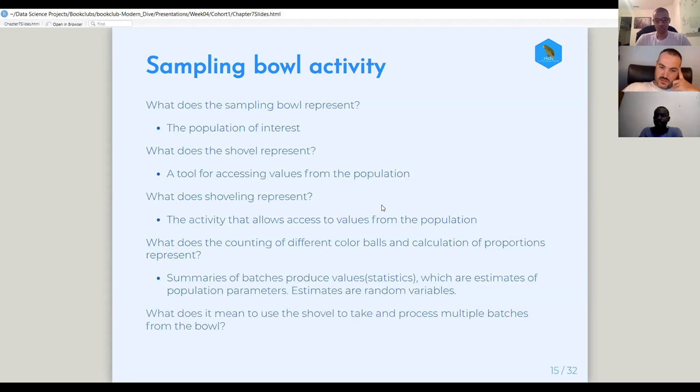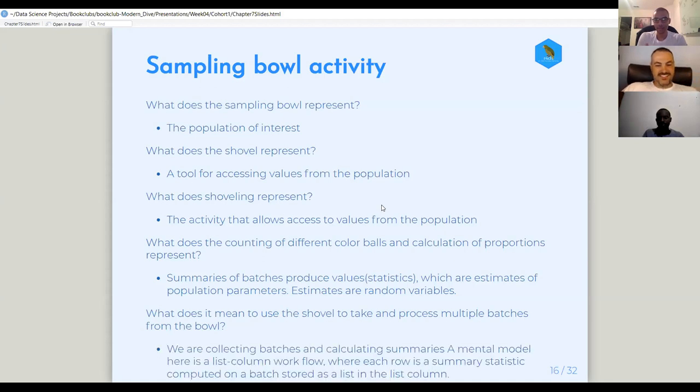And then what does it mean to use the shovel to take and process multiple batches from the bowl, right? So you're taking your shovel, you're taking your means of sampling, and you're going to your population of interest and you're taking a bunch of different samples out of it. What does that mean? What does that represent? This is the last one that I'll answer for a little bit, because I don't want to dominate. But I think you're like generating the sampling distribution when you're doing that. Yeah. So you're collecting those batches, you're summarizing them.